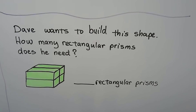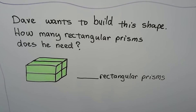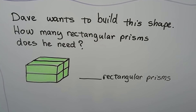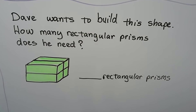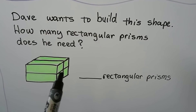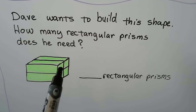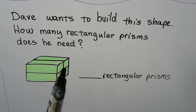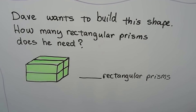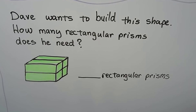Dave wants to build this shape. How many rectangular prisms does he need? We can look at the side and count: one, two, three, four rectangular prisms.